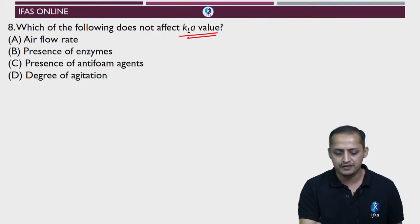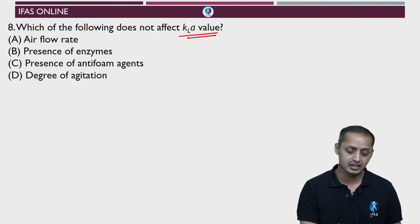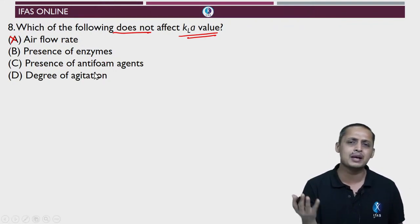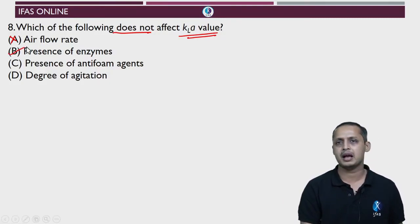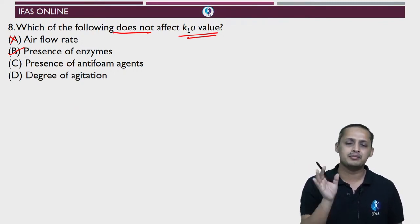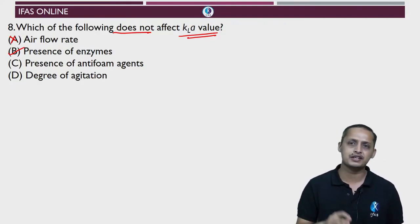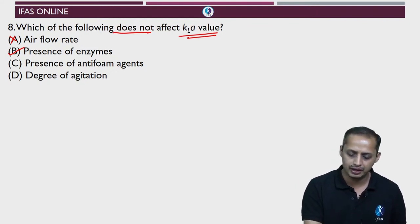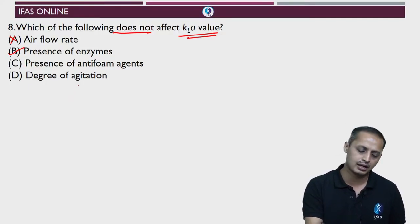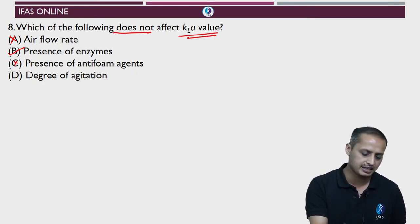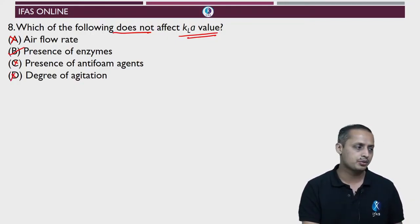Which of the following does NOT affect K_LA? Air flow rate, agitation, and antifoam agents all definitely affect K_LA. Antifoam agents lower surface tension, preventing bubbles from coalescing, thereby reducing K_LA. Degree of agitation is also a known factor. Presence of enzymes — how would enzymes affect mass transfer? They act as reaction centers inside cells. So the answer is option B: presence of enzymes does not affect K_LA.